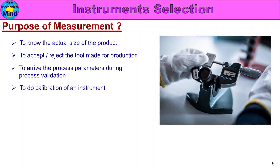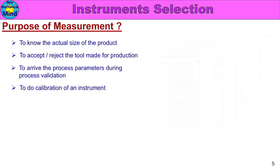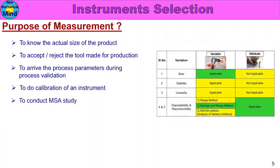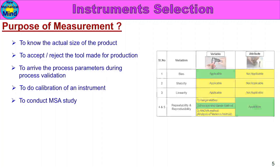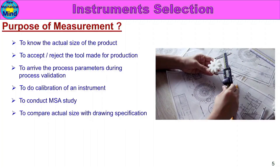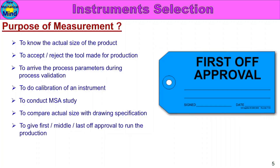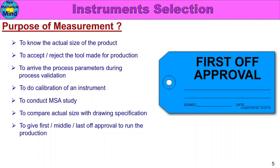Calibration is confirmed. Measurement is used to conduct an MSA study — bias, stability, linearity, repeatability, and reproducibility. Measurement is used to compare actual size with drawing specification at 100%. Measurement is used to give first, middle, and last approval to run mass production — sample parts are approved before production. Quality of data and measurement are very important for various purposes.